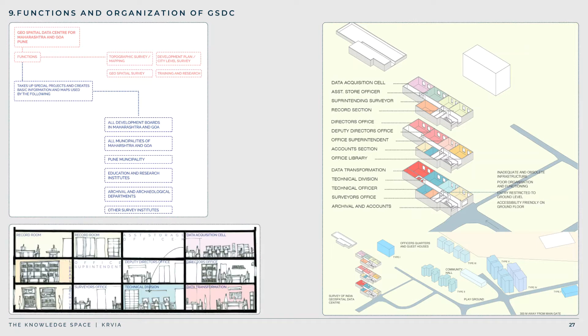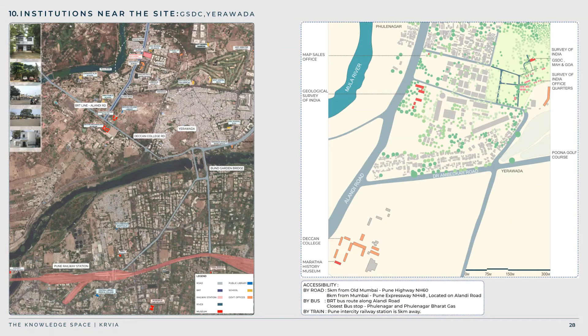Despite its important role in development, education, and research, the GSTC remains obsolete, inefficient, and secluded. Its organization is not streamlined to function smoothly, and the architecture does not aid the institution in any way. The data acquisition cell, transformation cell, and technical cell are all located on different floors, cramped in one small building. The library is a small room in the building, not accessible to anyone.